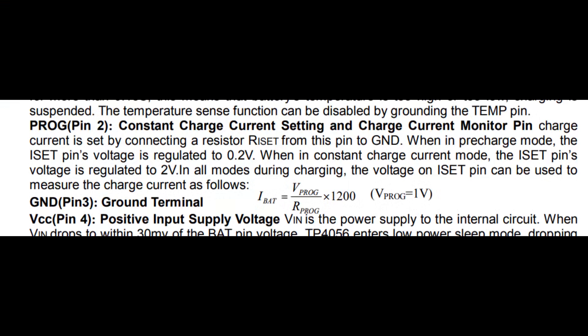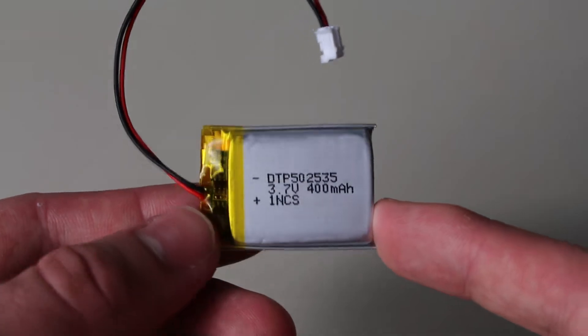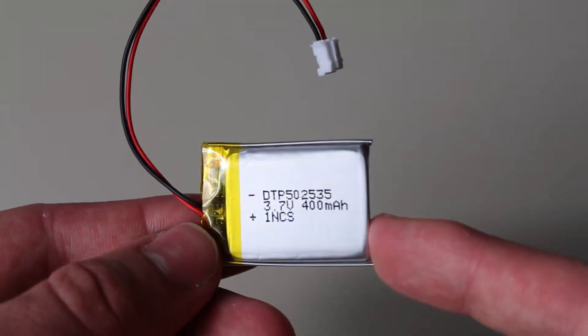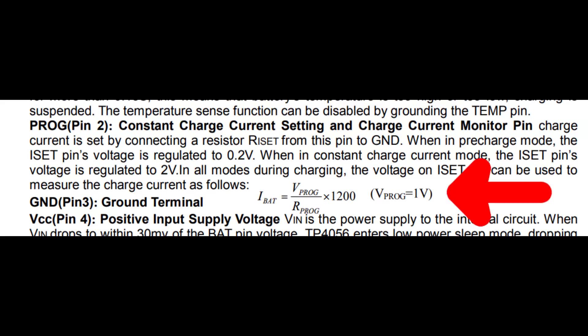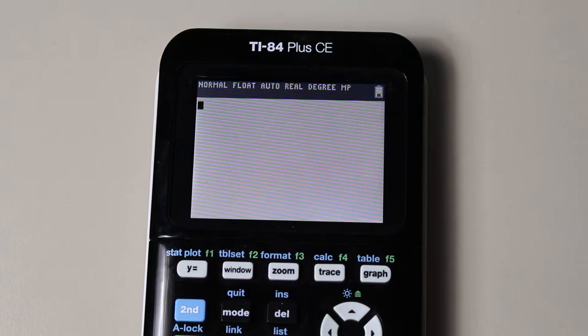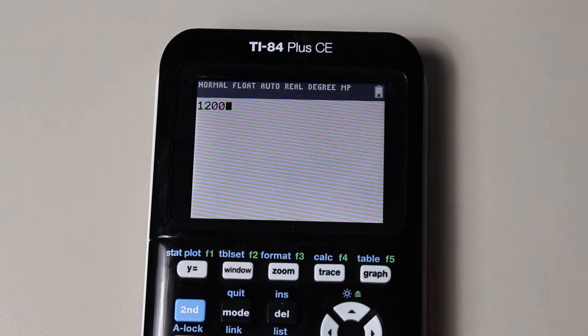Looking at the TP4056 IC datasheet, we can see that we can select the charge current by selecting the resistor on the program. Let's change it to 400 milliamps or less to match this battery. We can select our resistor with this simple math equation that I found on the datasheet. 1200 divided by your resistor in kilo-ohms. After some algebra, we get a resistor of 3 kilo-ohms.